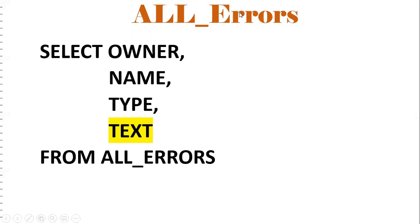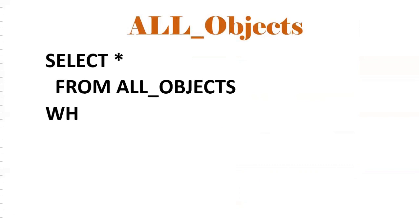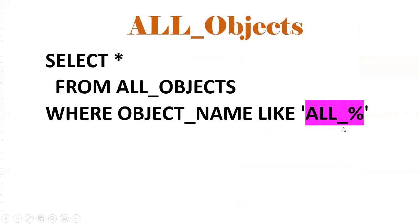This is very important — we use ALL_ERRORS regularly to find errors in named objects like procedures, functions, and packages. As a database developer you should know ALL_OBJECTS, ALL_SOURCE, ALL_ERRORS, table information, indexes, and statistics. Based on privilege, you can access DB_OBJECTS, ALL_OBJECTS, or USER_OBJECTS — Oracle provides these views accordingly. Hope this is clear. If you like the content, subscribe and share the channel. Thank you for watching.